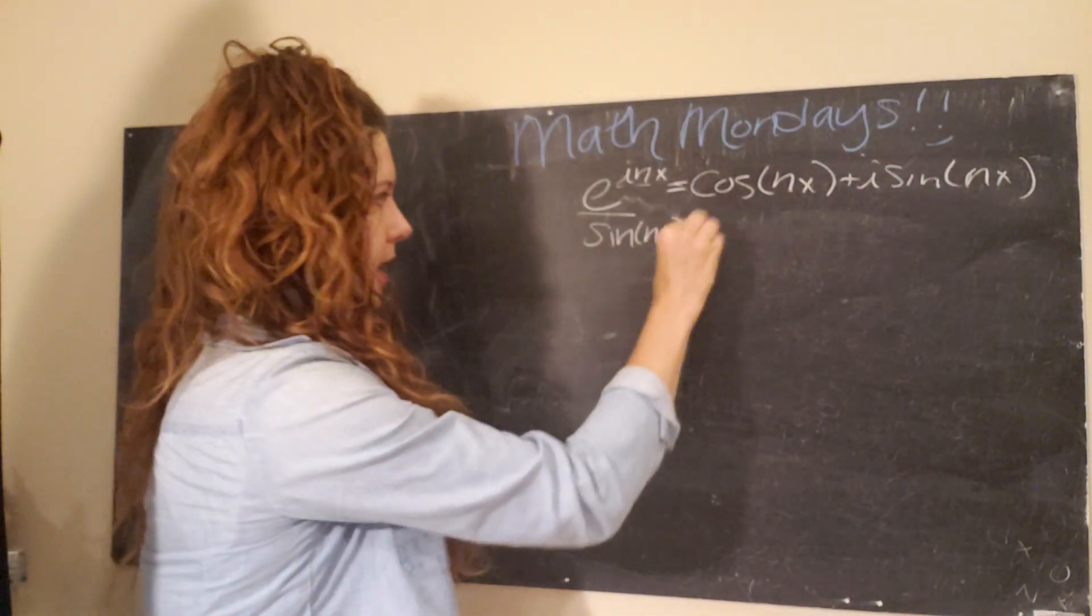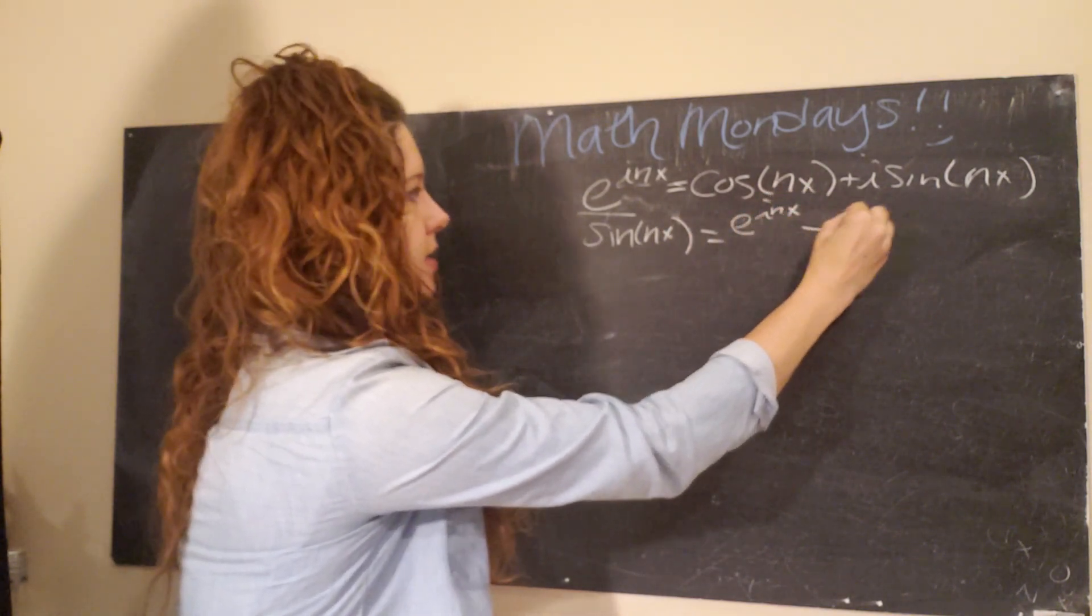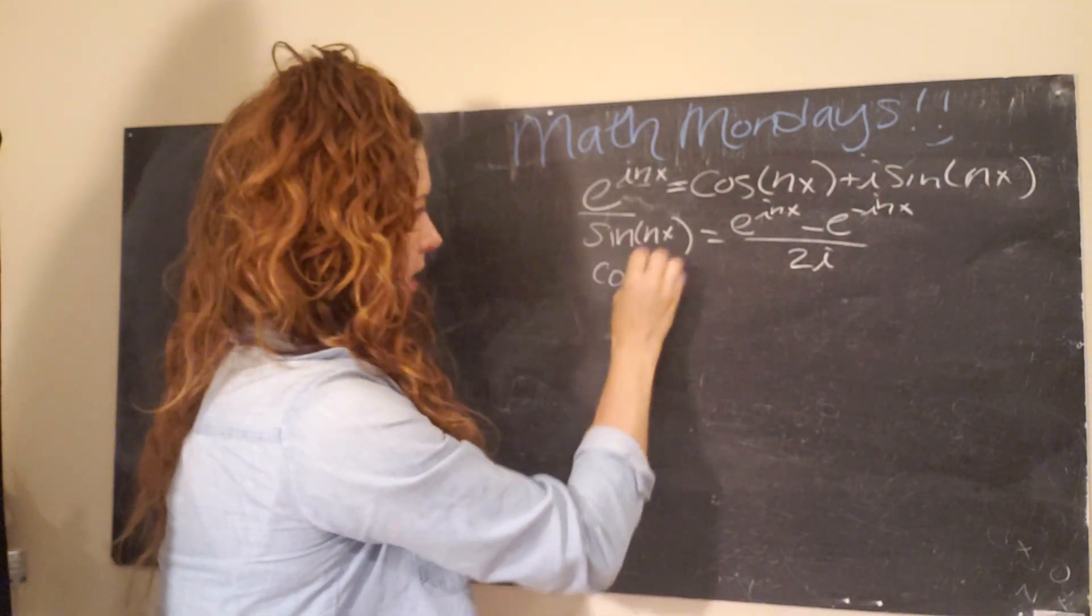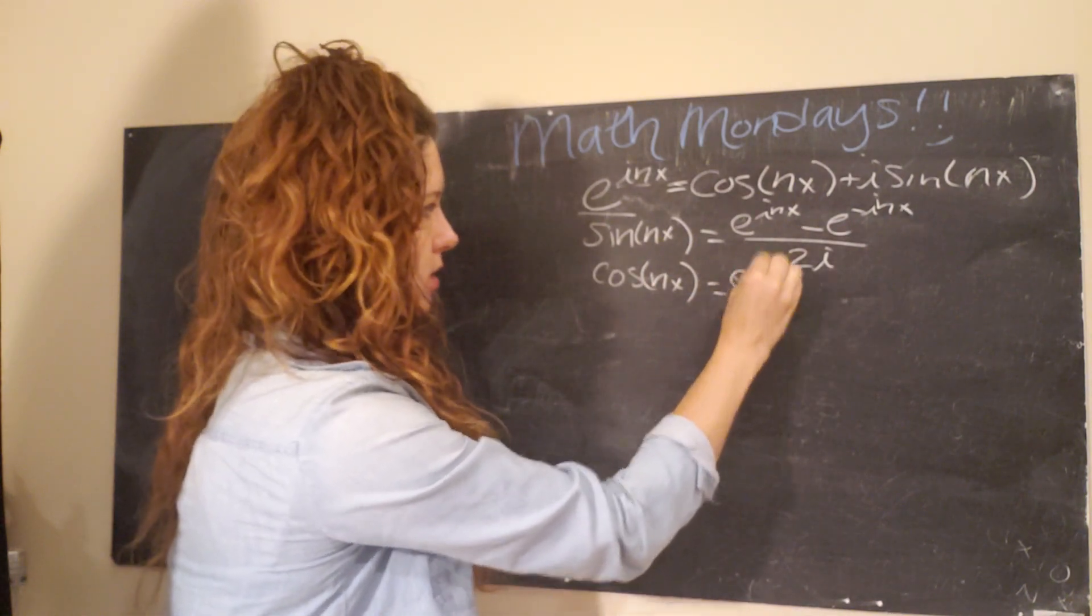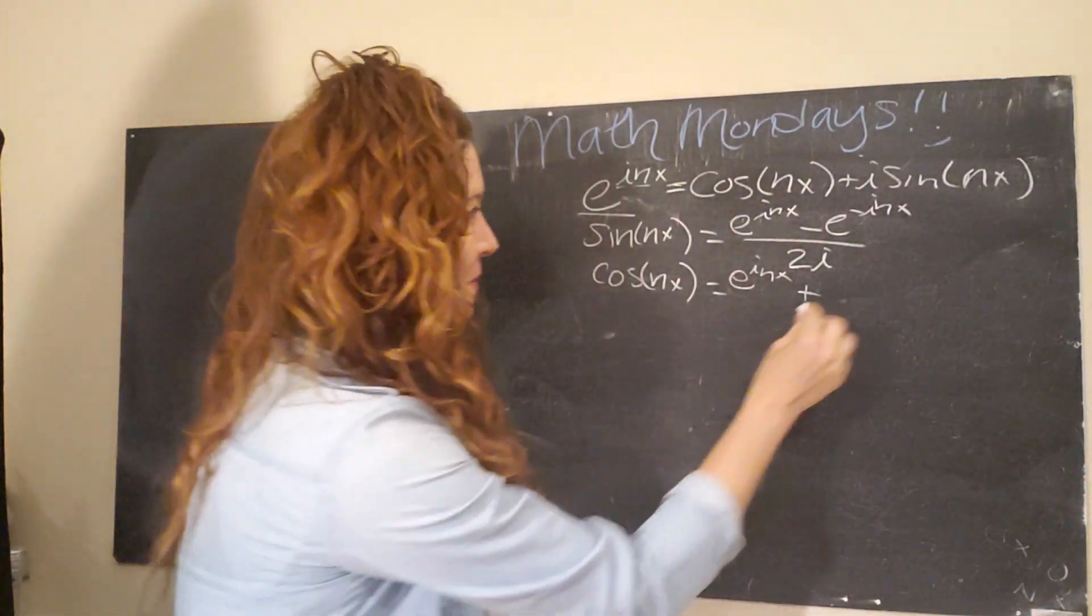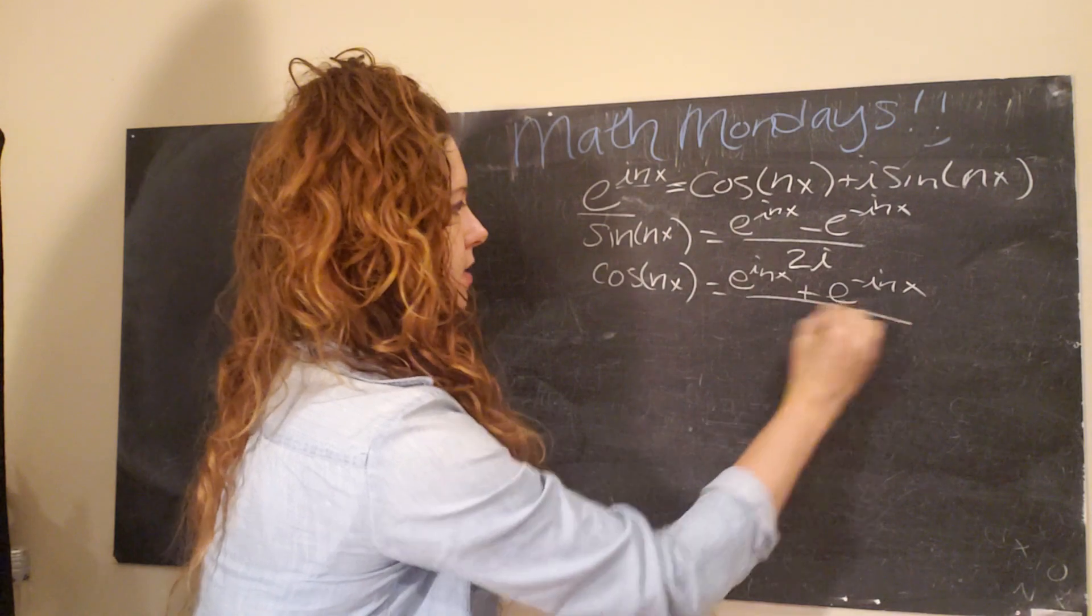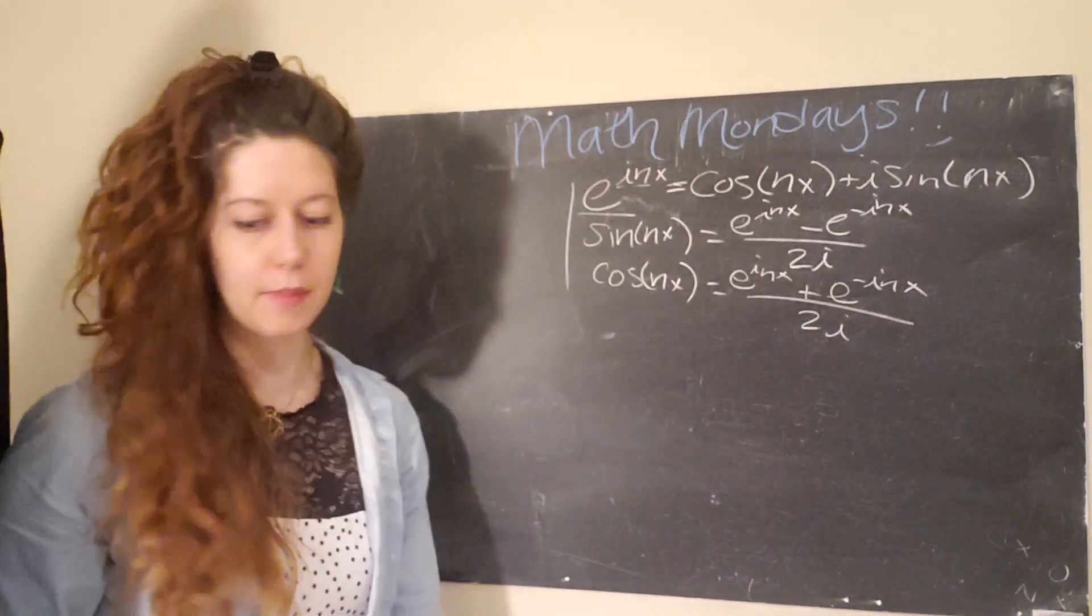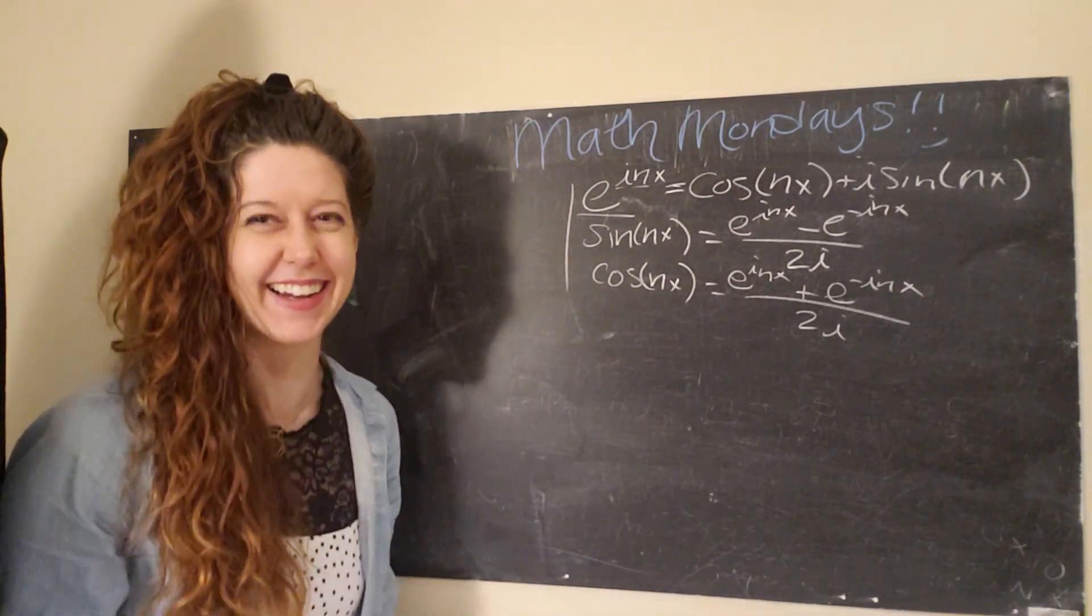And then just how e to the inx, where n is an integer or a whole number, just how e can be written in terms of sine and cosine, both sine and cosine can also be written in terms of e, like so. So we have sine of nx, which equals e to the inx minus e to the negative inx divided by 2i. And cosine of nx is almost exactly the same with a slight change in sign. S-i-g-n, not s-i-n-e. Plus e to the inx or negative inx divided by 2i.